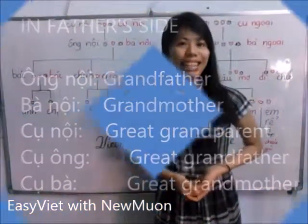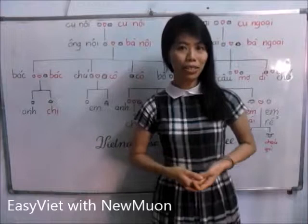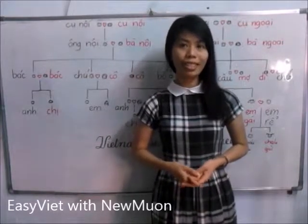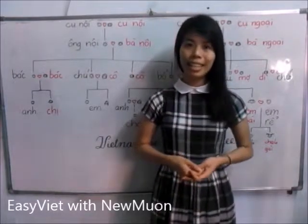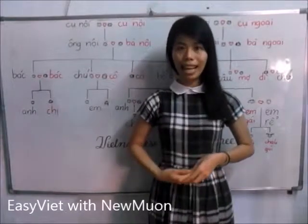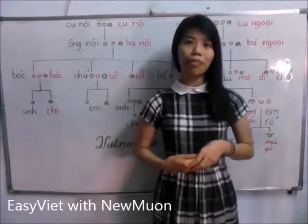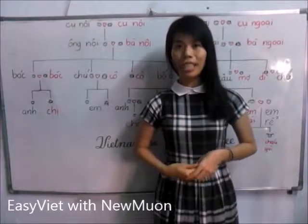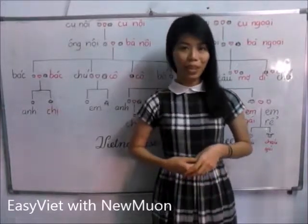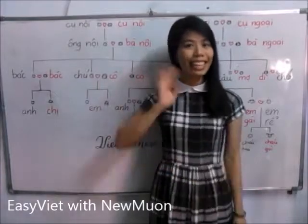To end this lesson, I would like to remind you of one thing in Vietnamese culture: if you see your aunt on the father's side, you should say 'Chào Cô', or on the mother's side, you should say 'Chào Dì'. Hope you enjoyed the lesson. Tạm biệt!